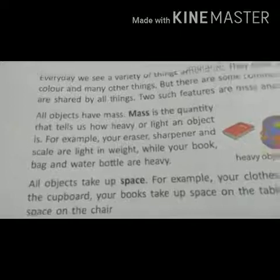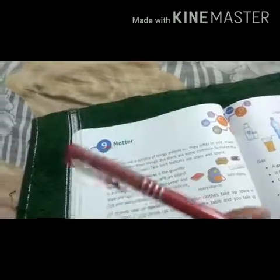For example, you can see this pen in my hand. This pen has a weight because it contains some mass, and this mass gives it that weight. And if I keep this pen here, you can see that it is occupying some space. So this pen has mass and occupies space — therefore, this pen is matter.